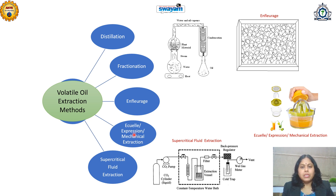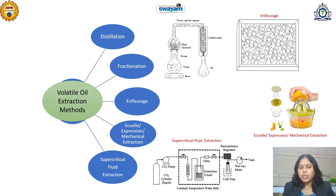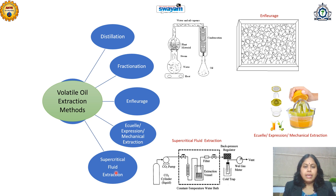The Ecuelle expression or mechanical extraction method uses specific devices available at laboratory and industry scale. It is generally preferred for citrus fruits. The sharp points on the device rupture the cell walls present near the rind of the fruit, releasing a mixture of water and essential oil. This mixture is further separated using a distillation assembly and then by fractionation to separate the different components of the essential oil mixture.